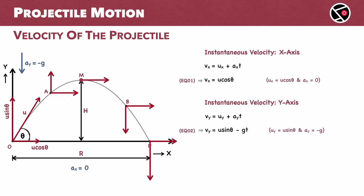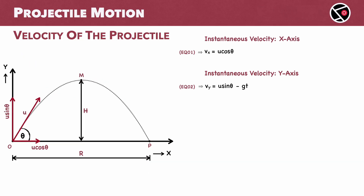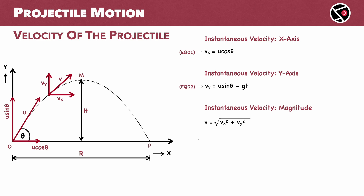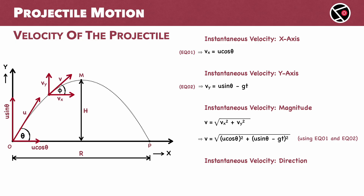Vx is constant and Vy keeps changing as the projectile moves along the trajectory. The projectile's velocity V at any point is found by adding the horizontal and vertical components Vx and Vy. The magnitude of this velocity V is the square root of Vx squared plus Vy squared. To find the direction of the velocity vector, we assume it makes an angle phi with the horizontal — this angle phi gives us the direction of instantaneous velocity. Tan of phi is Vy over Vx, or U sin theta minus Gt over U cos theta.